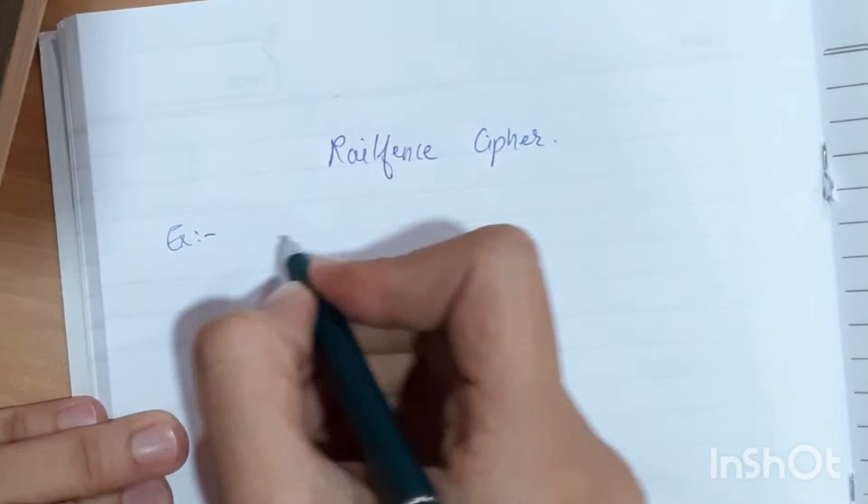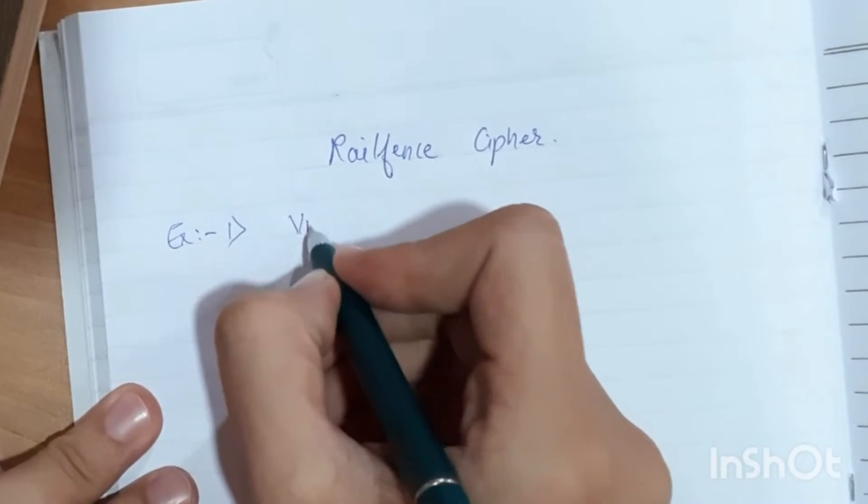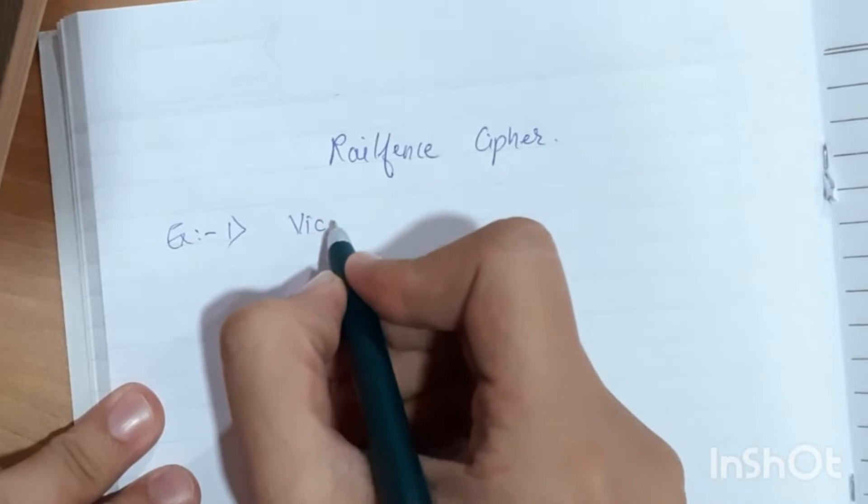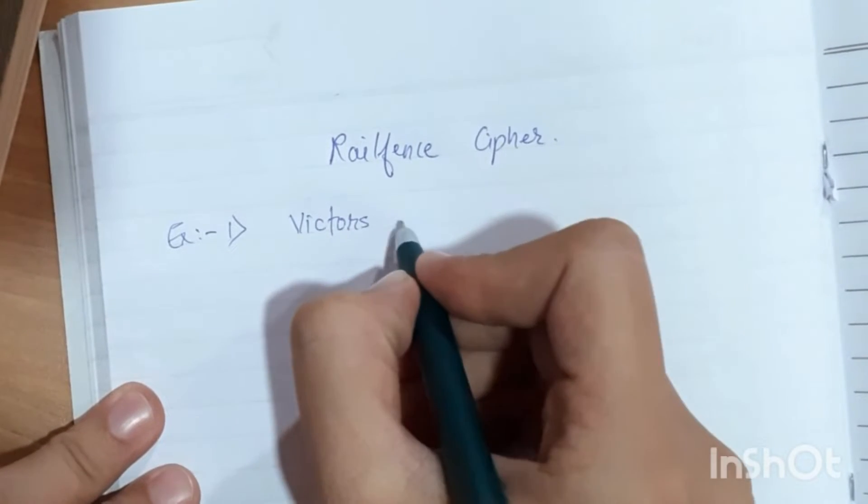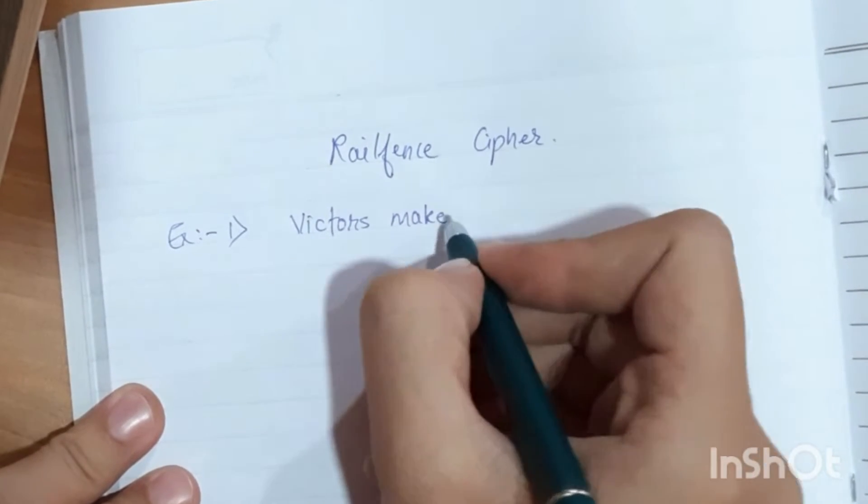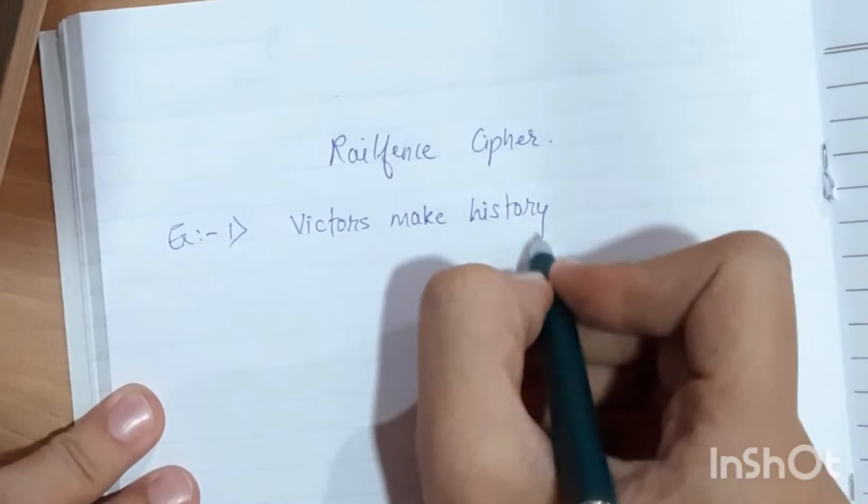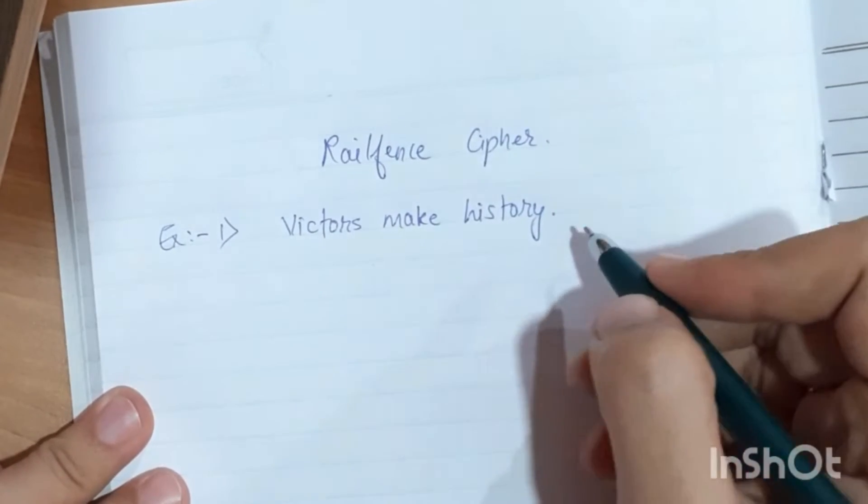The first example is Victors make history. Write down all the elements. We have written all the letters.